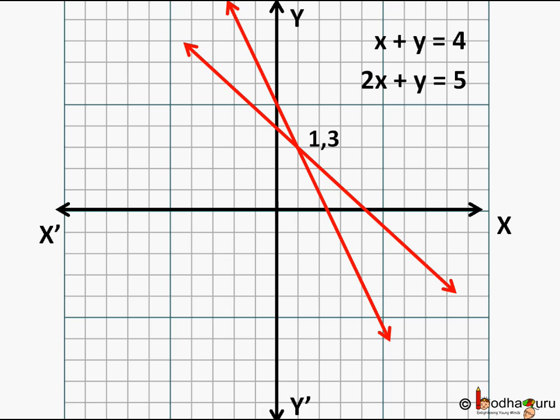Let us take an example. Given pair of linear equations x plus y equal to 4 and 2x plus y equal to 5. If we draw the graph of both these equations by calculating two points of each equation, we will get two lines.